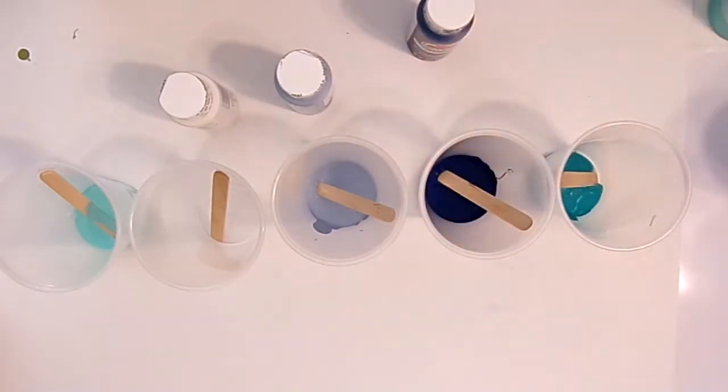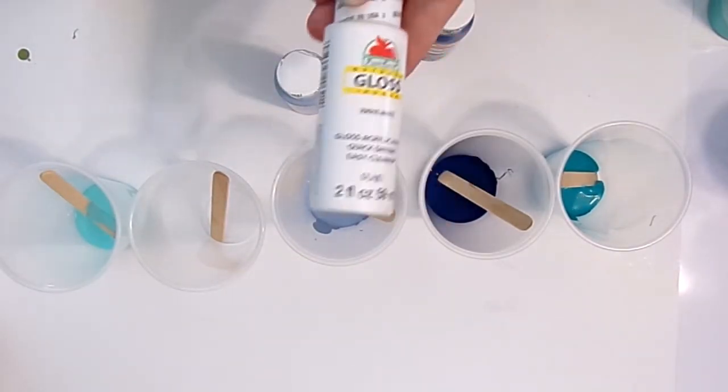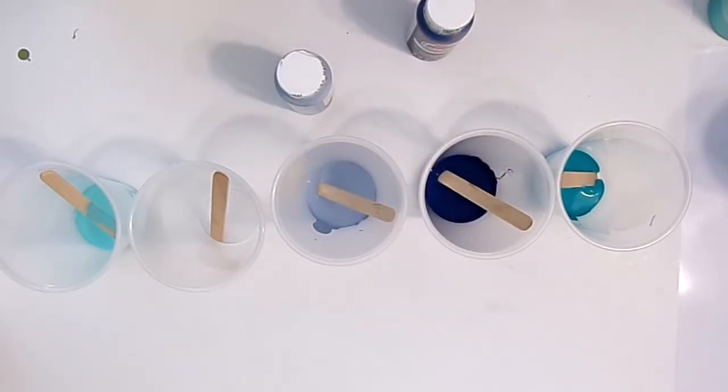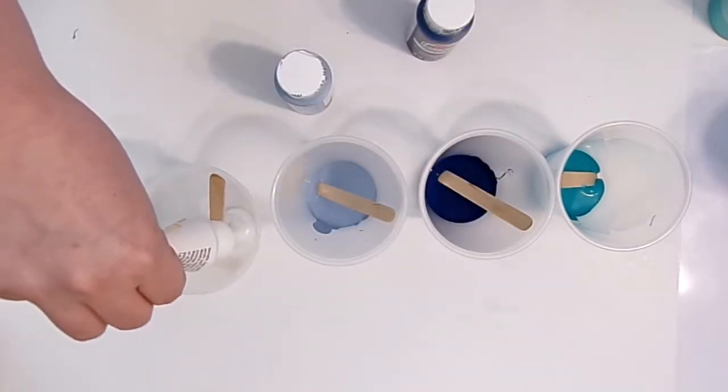And so we're gonna do one part paint to two parts of our Floetrol. But first, let's... Okay, so for the gloss white, for white, I'm going to put about half this bottle, so just a tad more of the white.